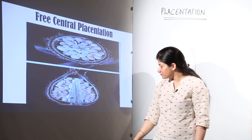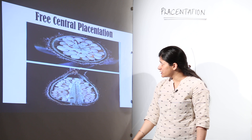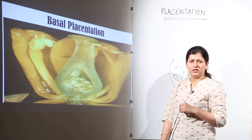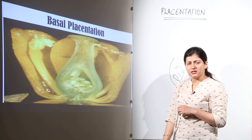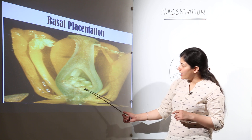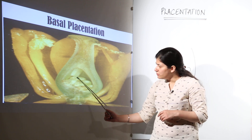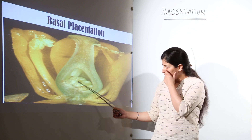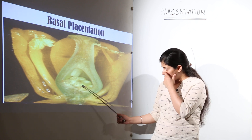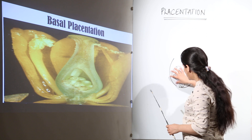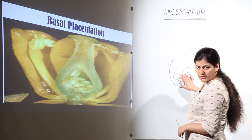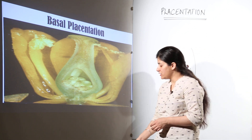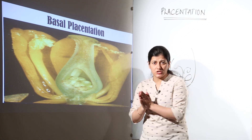The last one is basal placentation. It is seen in Dianthus and Argemone. The ovules are located at the base of the ovary — at the central base part. This is what you have to keep in mind while talking about basal placentation.